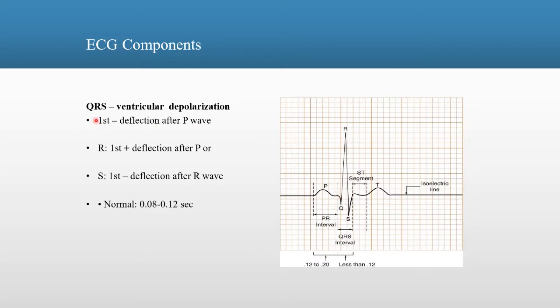The first is the Q. The Q-Wave is defined as the first deflection after the P-Wave. R is the first deflection after the P or the Q. The first positive deflection after the P-Wave is the R-Wave.